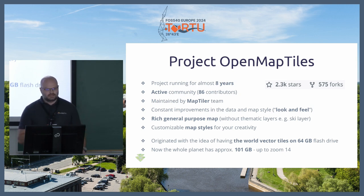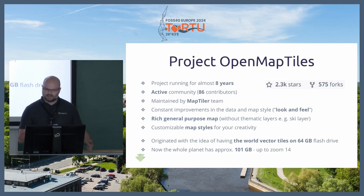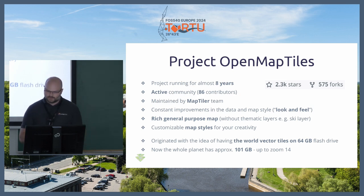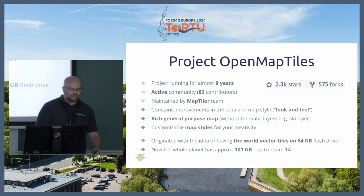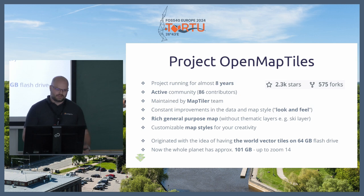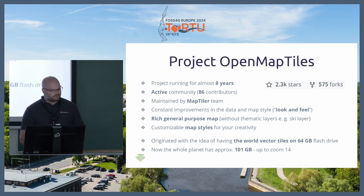The core data comes from OpenStreetMap, which has a very active community continuously adding new data. In OpenMapTiles, we keep adding new features and optimizing the data for vector tiles. We also keep the style and look and feel up to date. The main purpose is to generate a rich general purpose map without thematic layers like skill layers. The style is fully customizable, allowing you to create very beautiful maps from the vector tiles.